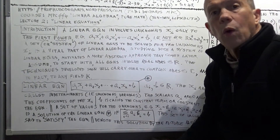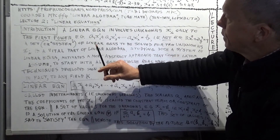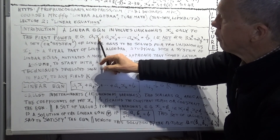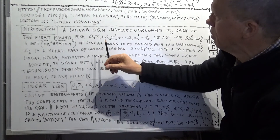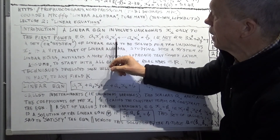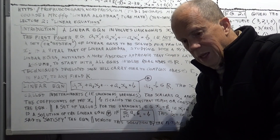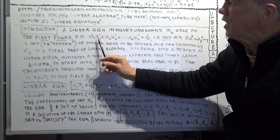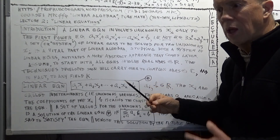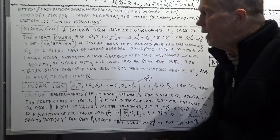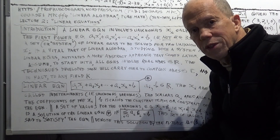So, linear equations. What is a linear equation? Here's an example. You have these unknowns or variables: X1, X2, dot dot dot, Xn. In two dimensions you'd say X and Y; in three dimensions, X, Y, Z. In an N-dimensional space you have N unknowns. What makes this equation linear? The powers of these unknowns are all one — that, by definition, is what is meant by a linear equation.